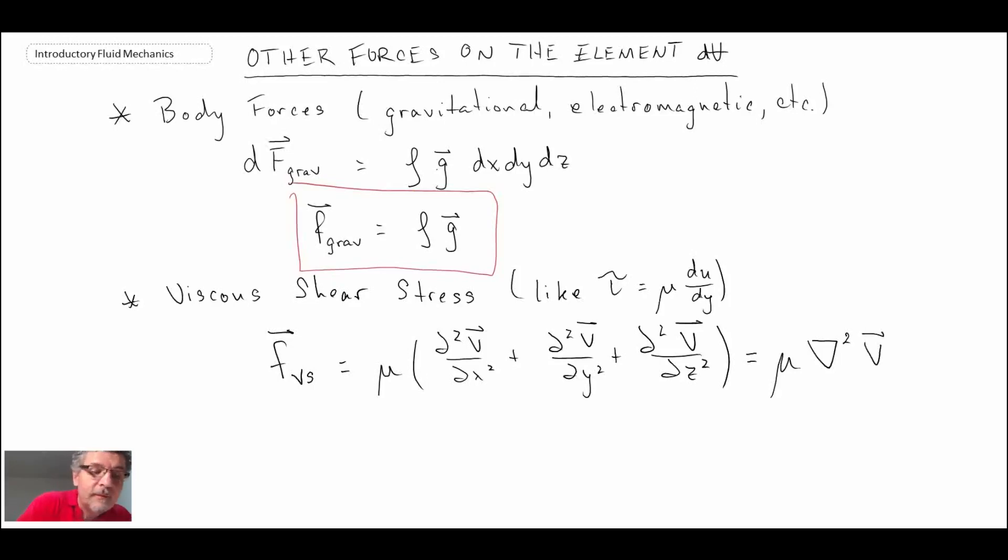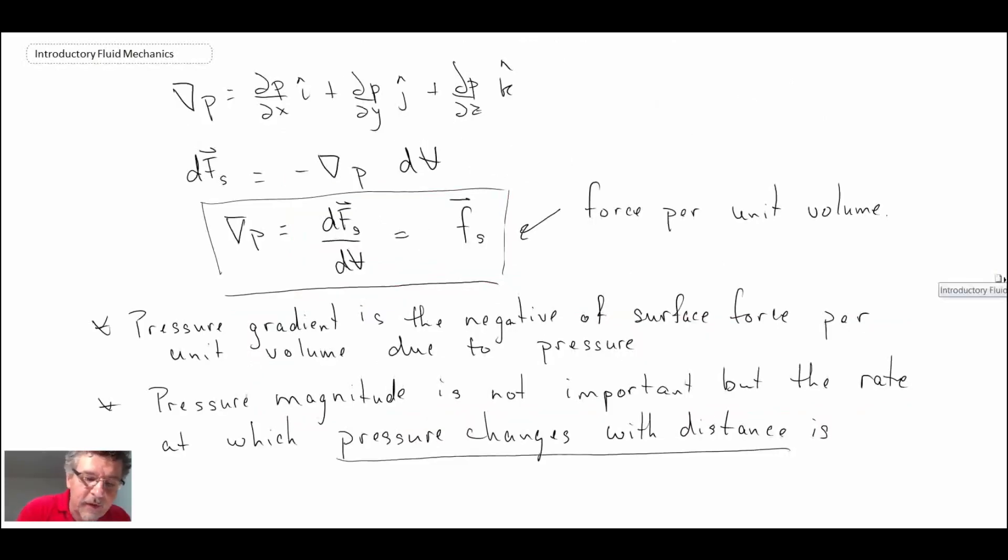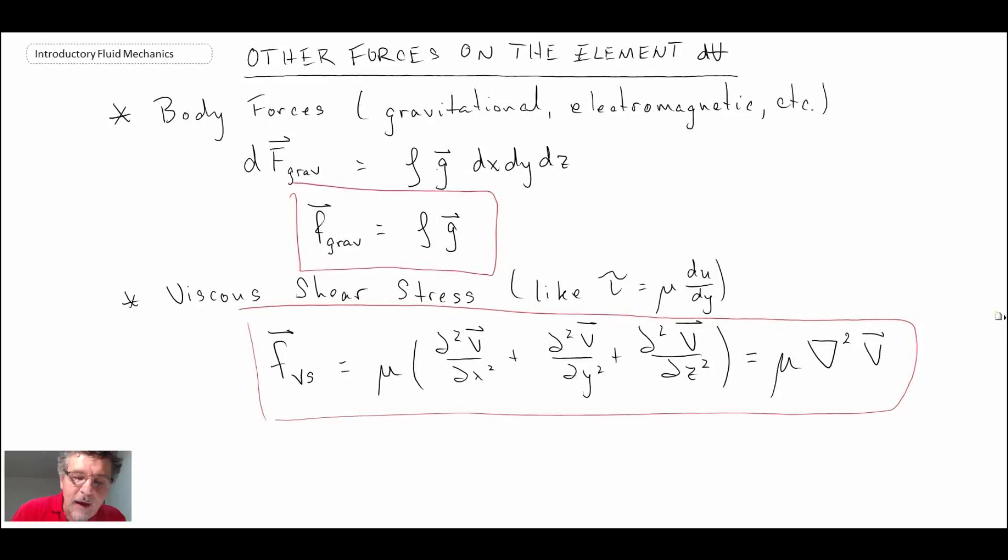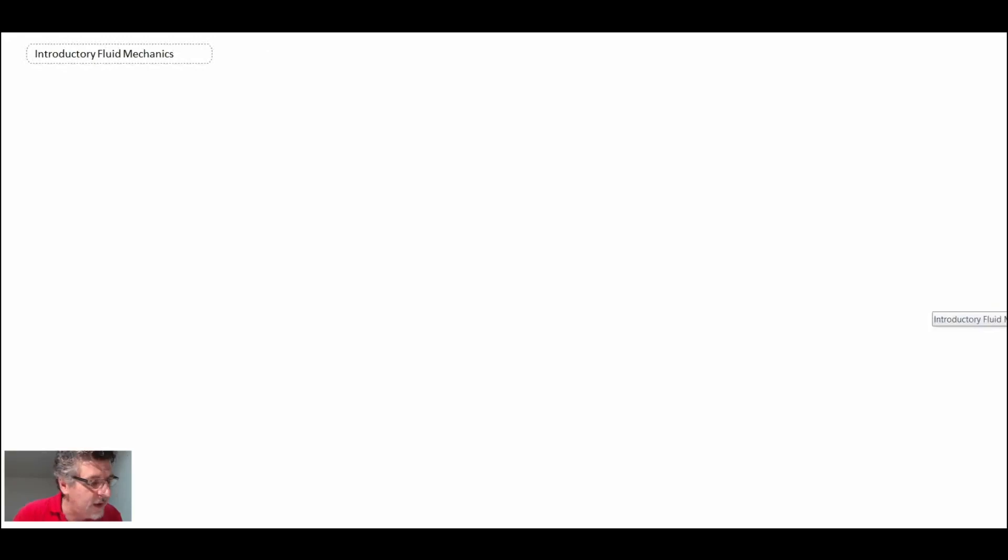So with that, we have the other forces that can be acting on our fluid elements. What we're going to do is combine those all together now. If you recall earlier, this is what we had for the pressure. We had the gradient of pressure, that was the surface force. And then we have this new force here and this one here for the body force and the viscous shear. Let's put those all together. We will sum forces.